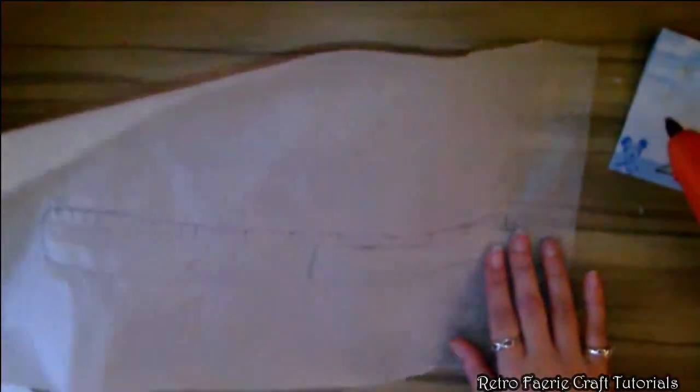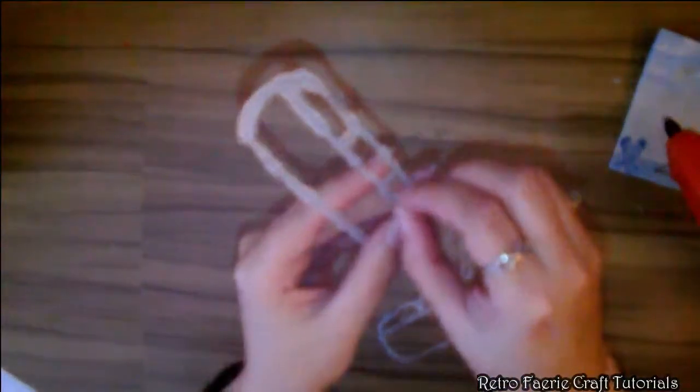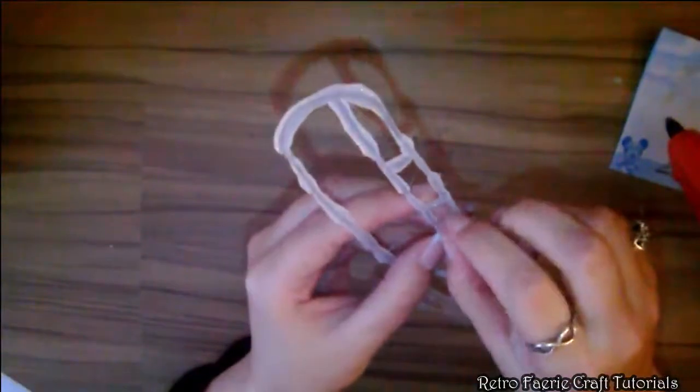Then you've got the face guard. Like I say, this is really wobbly so you want to kind of peel off all the little stringy bits of glue that appear. Then use a glue gun just to neaten it up.